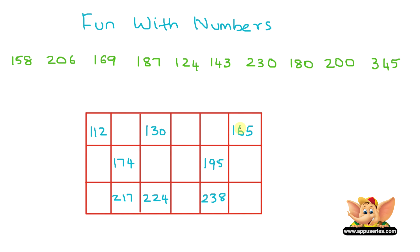So, if we look at the grid, we have 112, and then we have 130. From these numbers, what number comes between 112 and 130? Let's see. We have 124. Yeah, 124 comes after 112 and before 130.